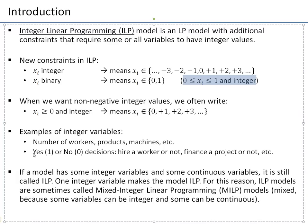Whenever we have yes-or-no decisions — do something or don't do something, like hire a worker or not, finance a project or not — we use binary variables, one for each worker or project. These binary variables are 1 if we hire or finance, and 0 if we do not hire or do not finance.